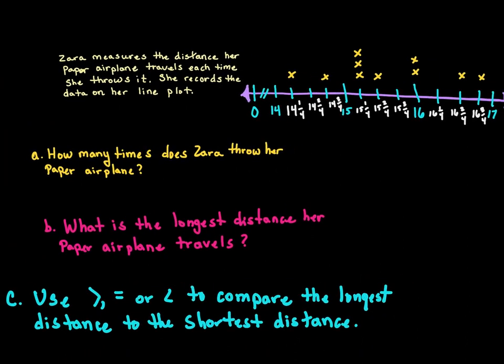How many times does Zara throw her paper airplane? Just like with the school news example, each X represents one try. Counting all the Xs, we get ten. So she throws the airplane ten times.